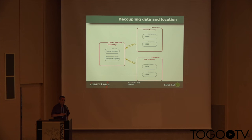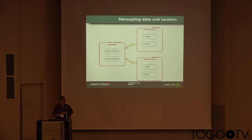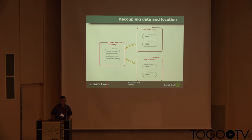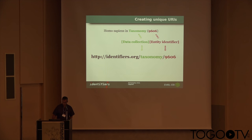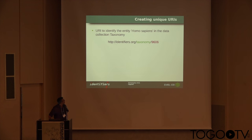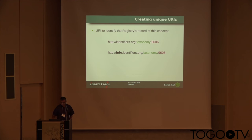The basic concept is that we consider these data collections as location-independent pools of data. For example, taxonomy — we think of the records there as location-independent. Since we store information about the resources, which are the resolving locations, we can associate those together so that you can have a location-independent identifier and know the resolving locations for each of the resources we store information for. This is what the basic URI looks like: identifiers.org is the resolver. We take the namespace, which is stored in our registry, and the identifier, which is provided by the data provider themselves — not one we make up. In this case, this is the Homo sapiens record in taxonomy. We also have another URI to identify our record in the registry — our record of this concept.